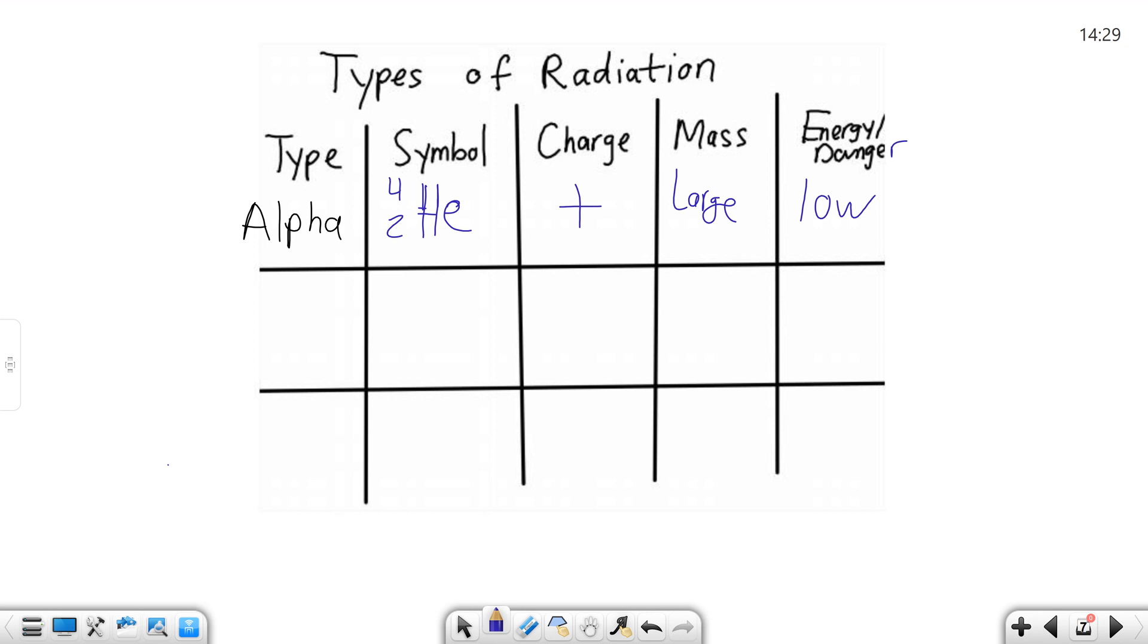This last column supposed to say energy danger. It has a low energy, it has a low danger. What I'm looking at there is essentially if this gets released are you in danger, the answer is basically no. You can block alpha with basically your skin, you can block it with paper.